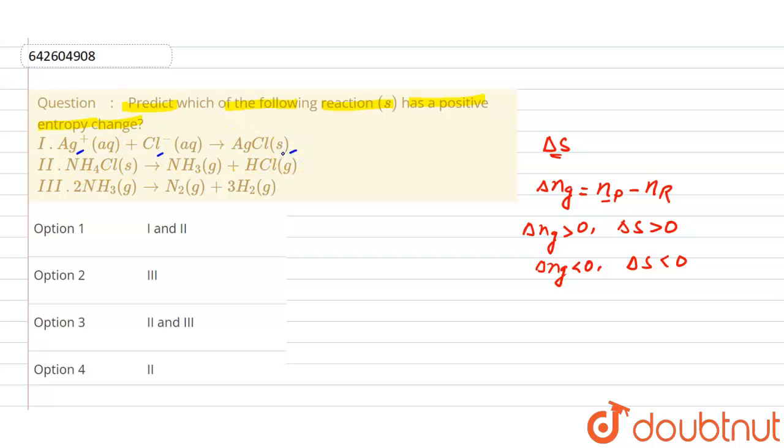So obviously degree of randomness after reactions is decreasing, so delta s will be negative for first one. So this is not the answer.